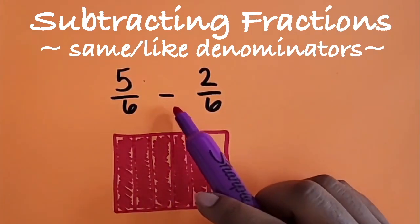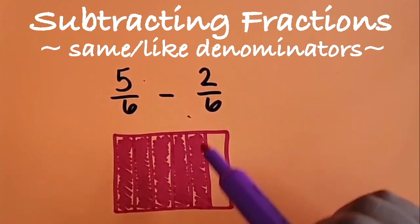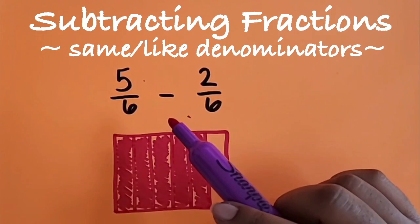Because our expression is showing subtraction, we will cross out 2/6 from the model to represent what's happening in the expression.